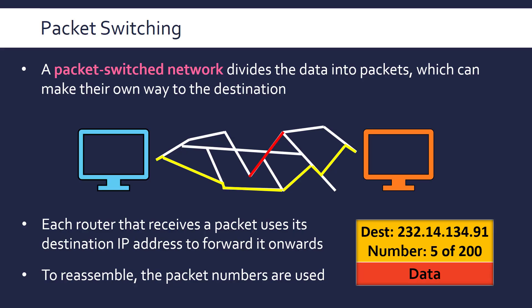This contrasts with packet switching, where because packets take different routes — and different routes take different amounts of time — they will arrive in a different order than intended. So we need a packet number or sequence number in the header that tells us which packet that is in relation to the total packets expected. This sequence number is needed for the receiving device to correctly reassemble the data at the other end.